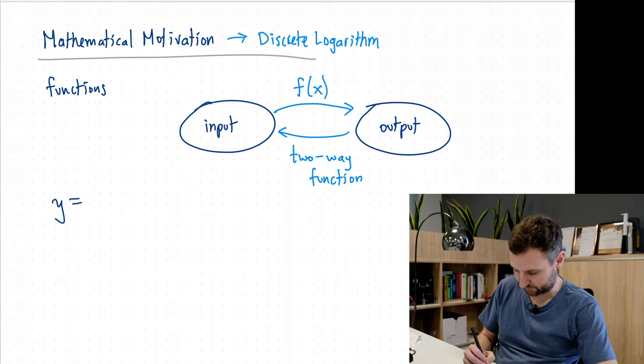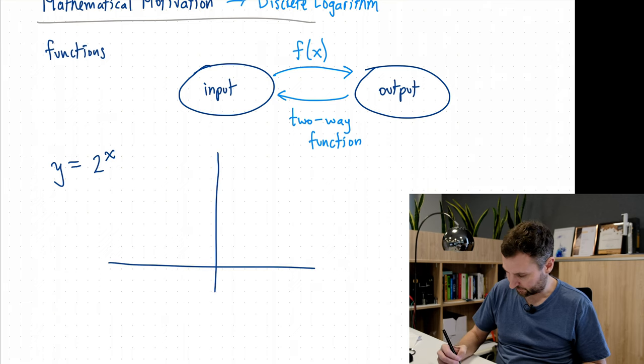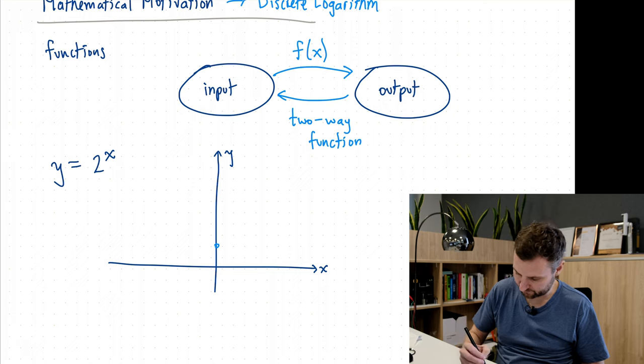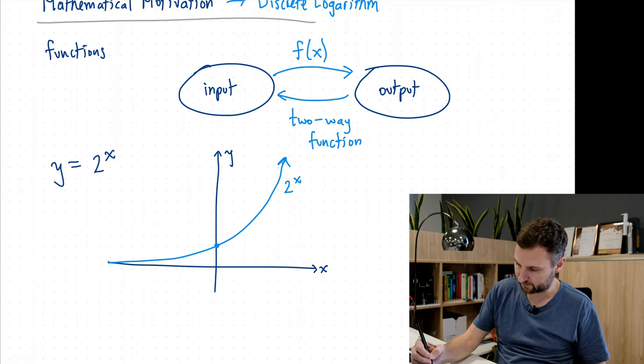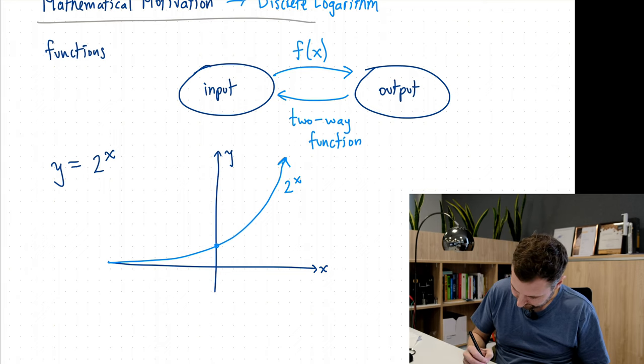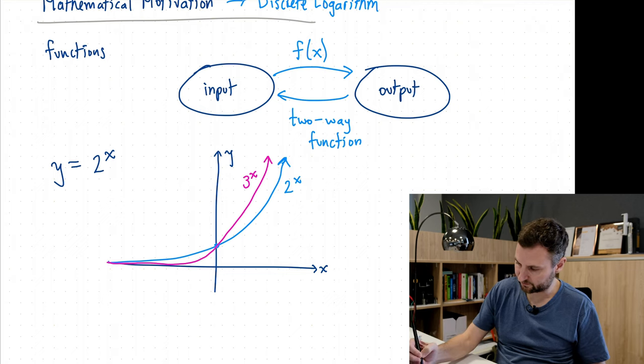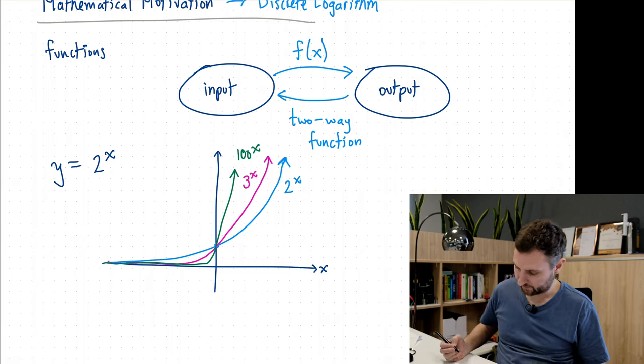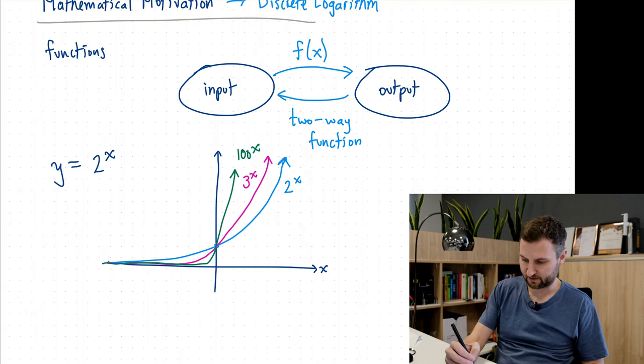Let's look at y equals 2 to the x, and we can do a quick graph or plot. All these are going to go through a special point, 0, 1. And so something like this, we can say that this is 2 to the x. Because the variable here is in the exponent, 2 raised to the x, this is called an exponential function.